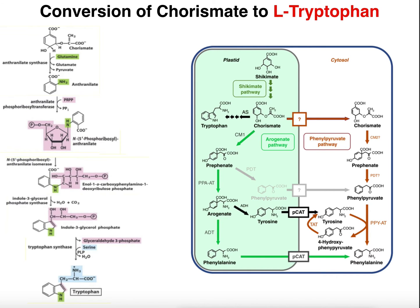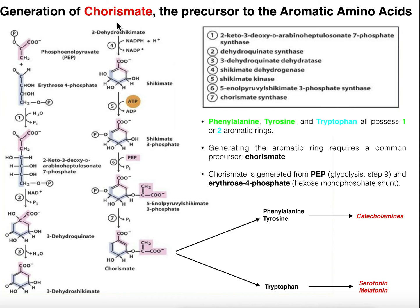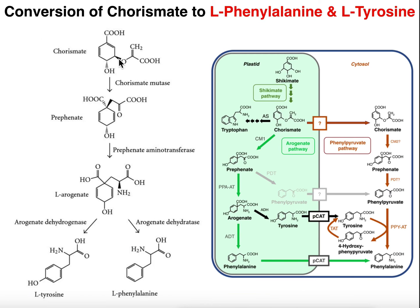In the previous two videos we first looked at the generation of a molecule called chorismate. This pathway, sometimes called the shikimate pathway, is only done in bacteria and plants for the most part. Chorismate can be used to generate tyrosine and phenylalanine, and this process only occurs in plants and bacteria — it does not occur in mammals such as humans.